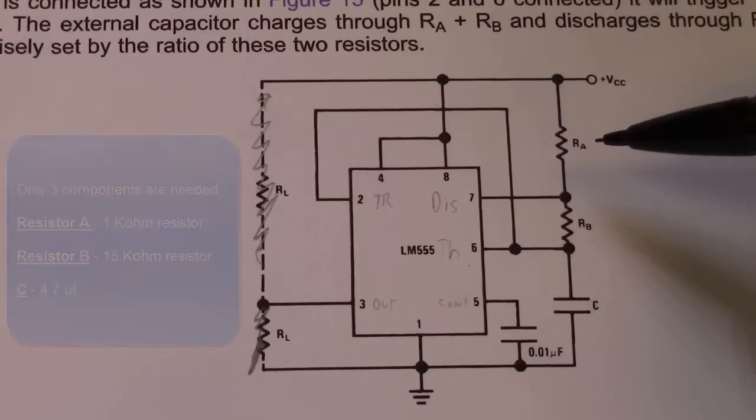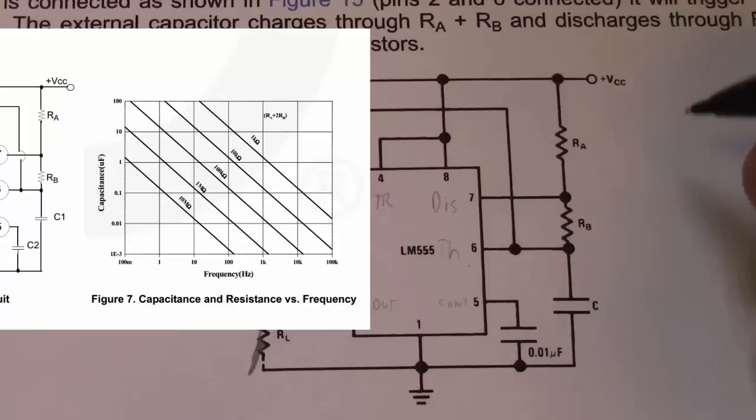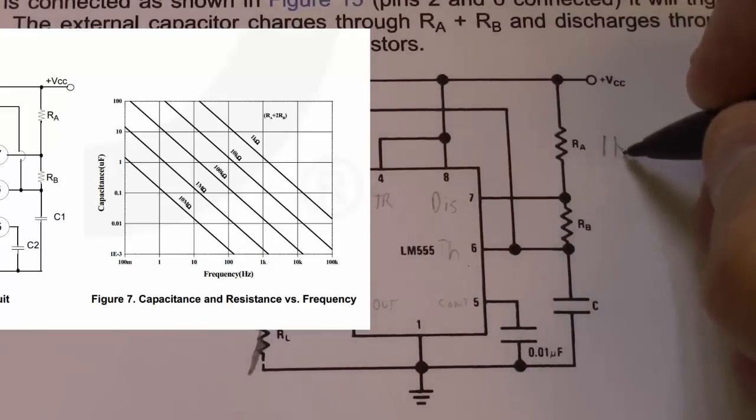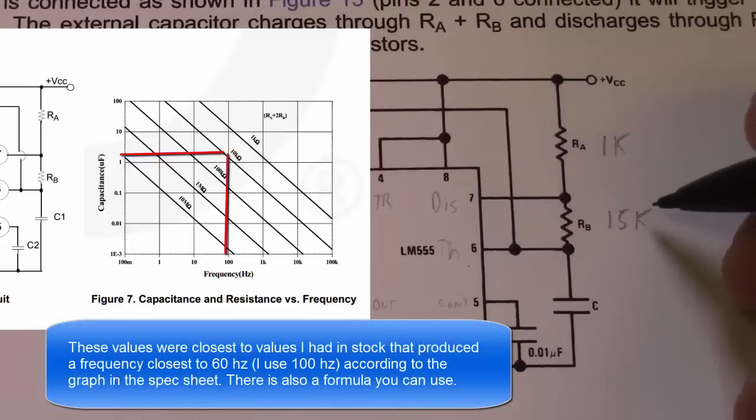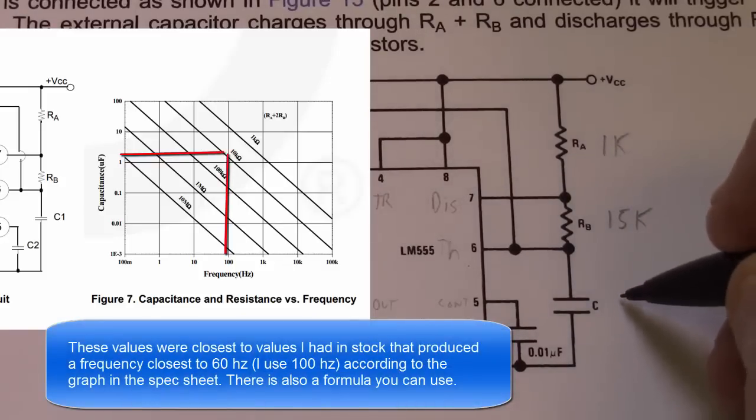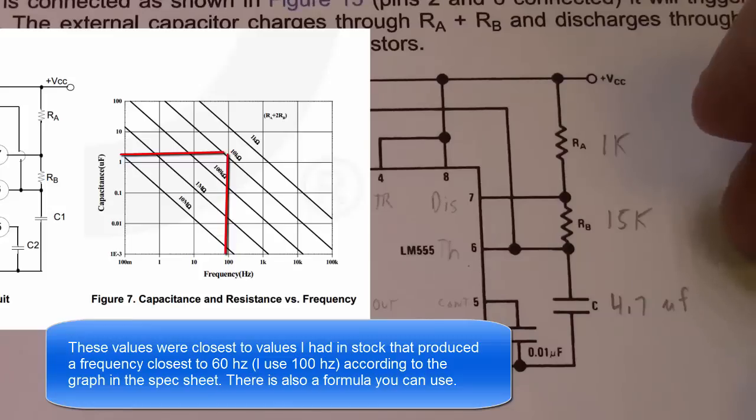For this particular circuit, we really only need two resistors. We need RA, which we'll make a 1K resistor initially, and RB down here, a 15K. We're going to make this capacitor 4.7 microfarad because these were some values that I had that will work well for the frequency we're looking at.